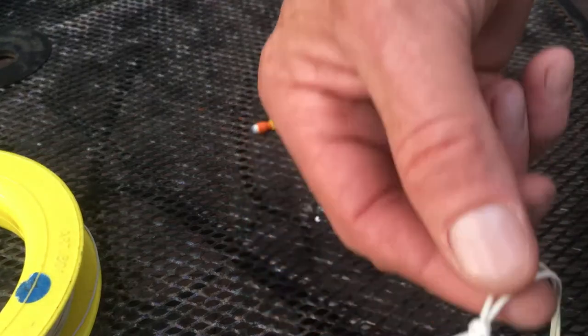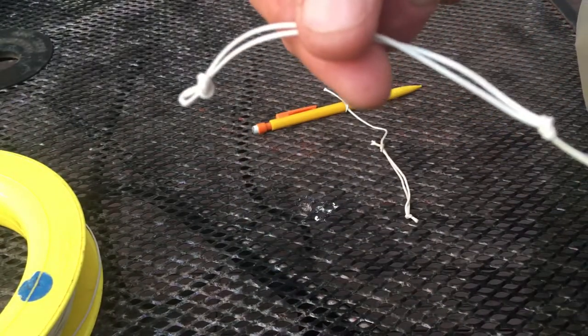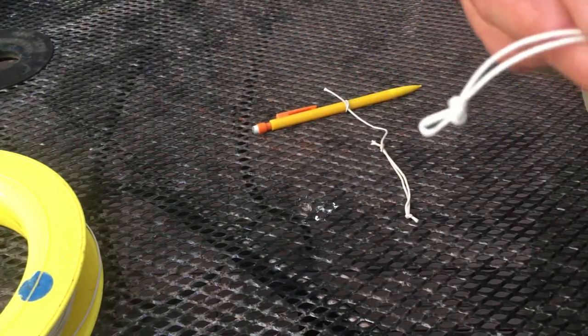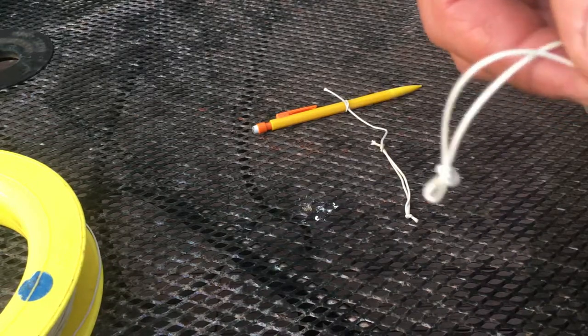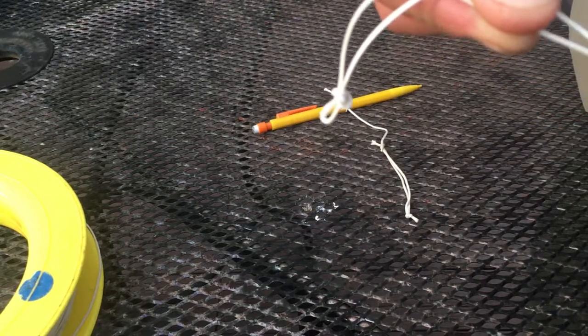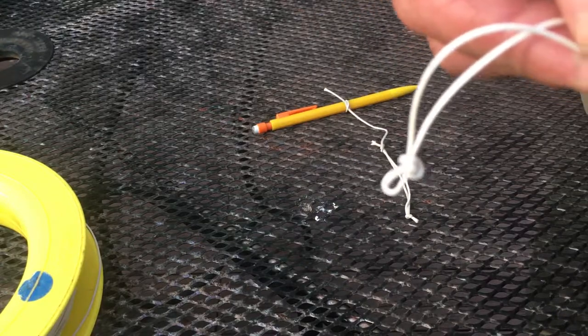Let's say that this is your flying line. And the string goes off to your kite. I'm sorry, the string goes off to your kite reel over there.